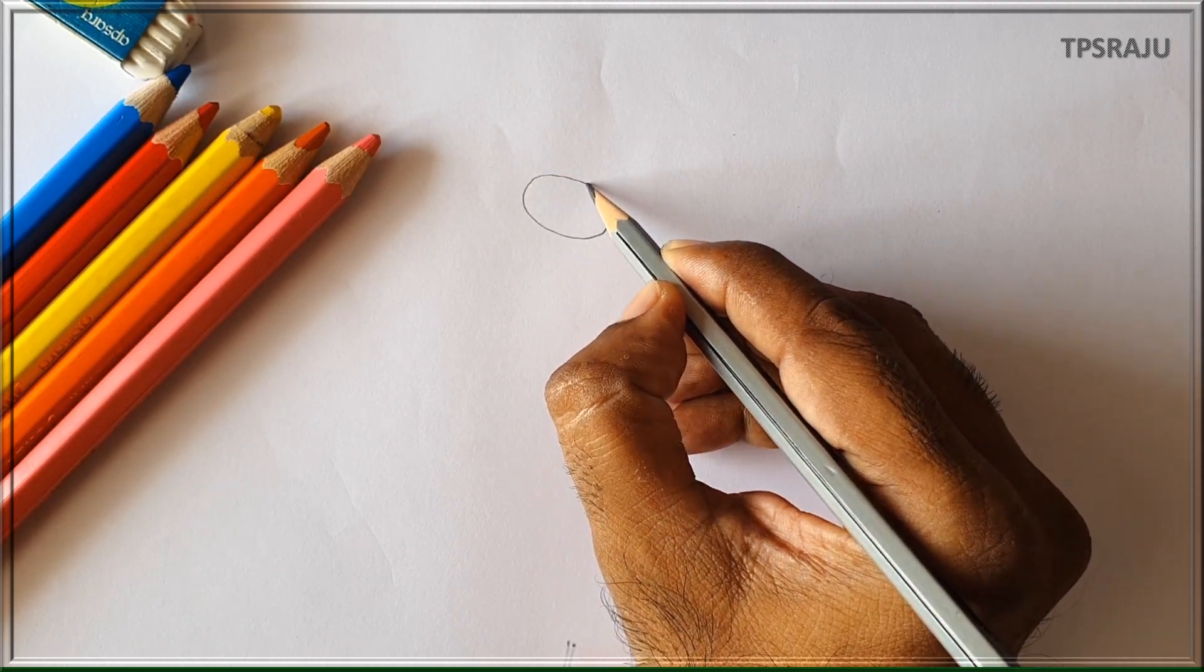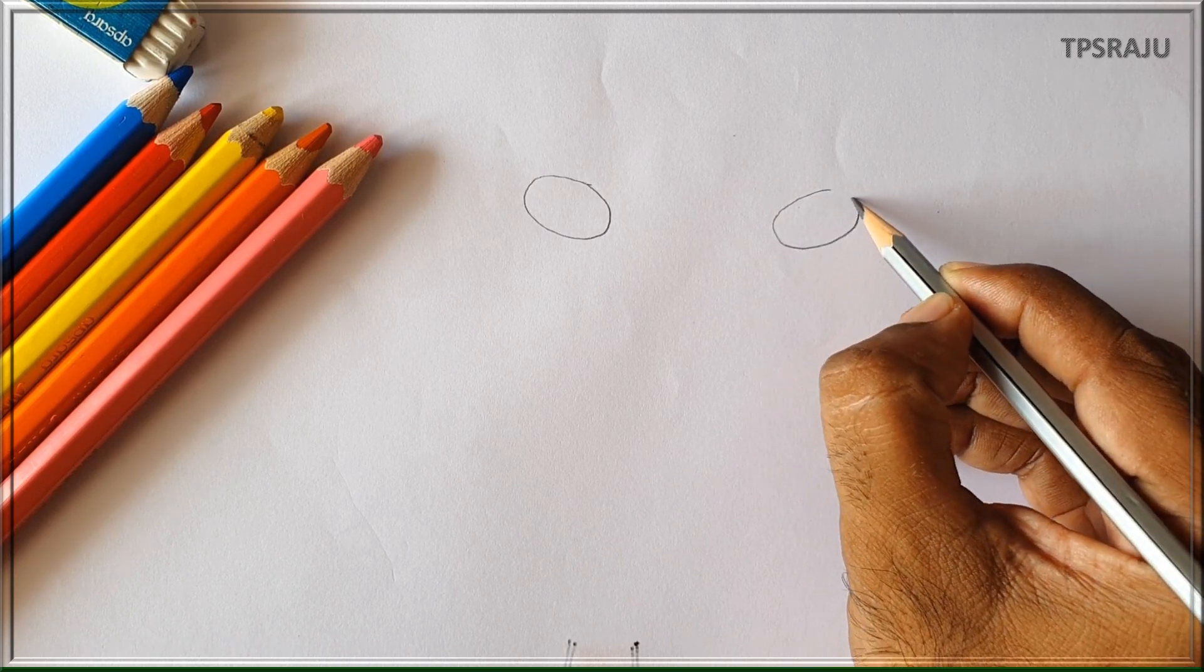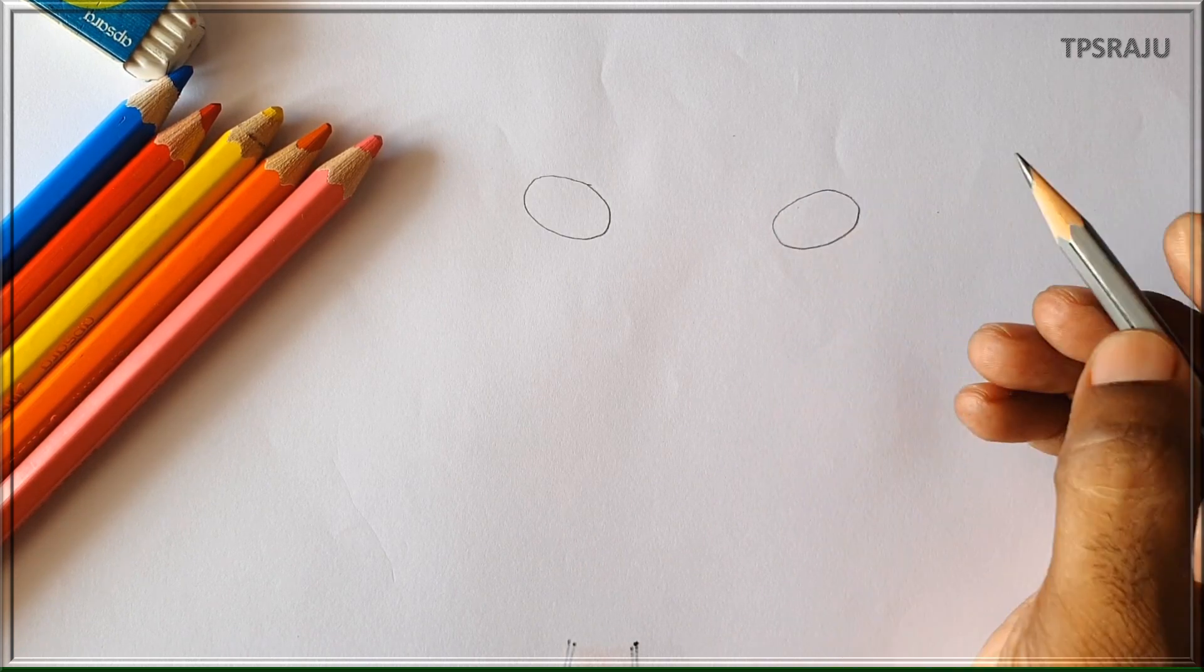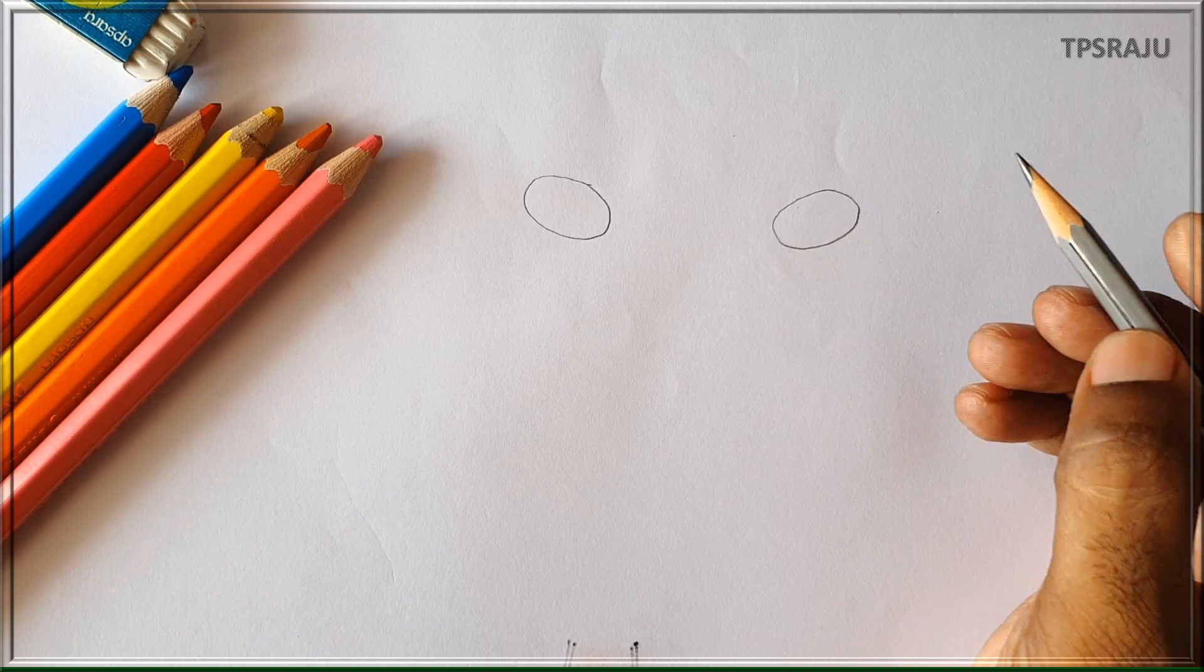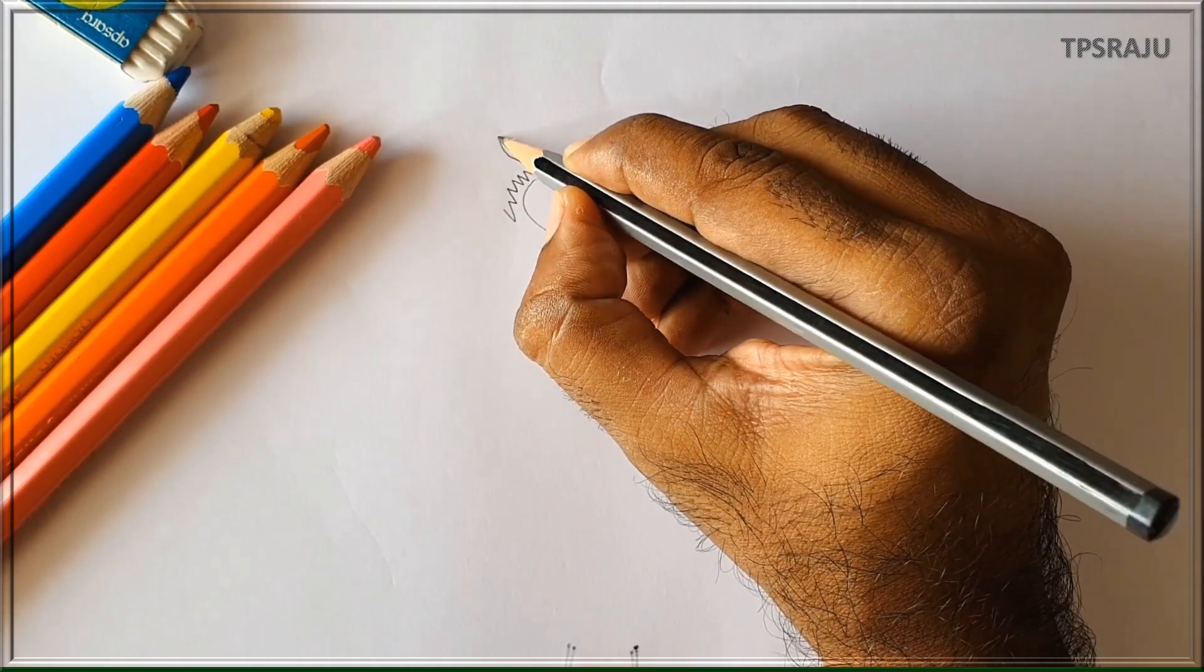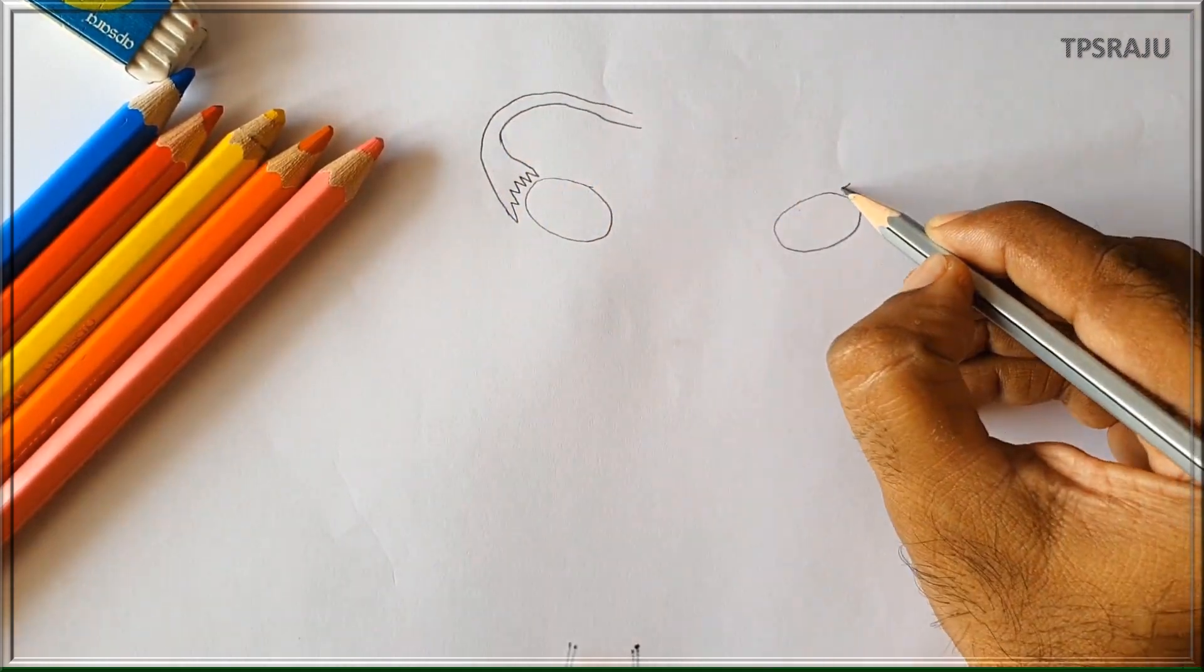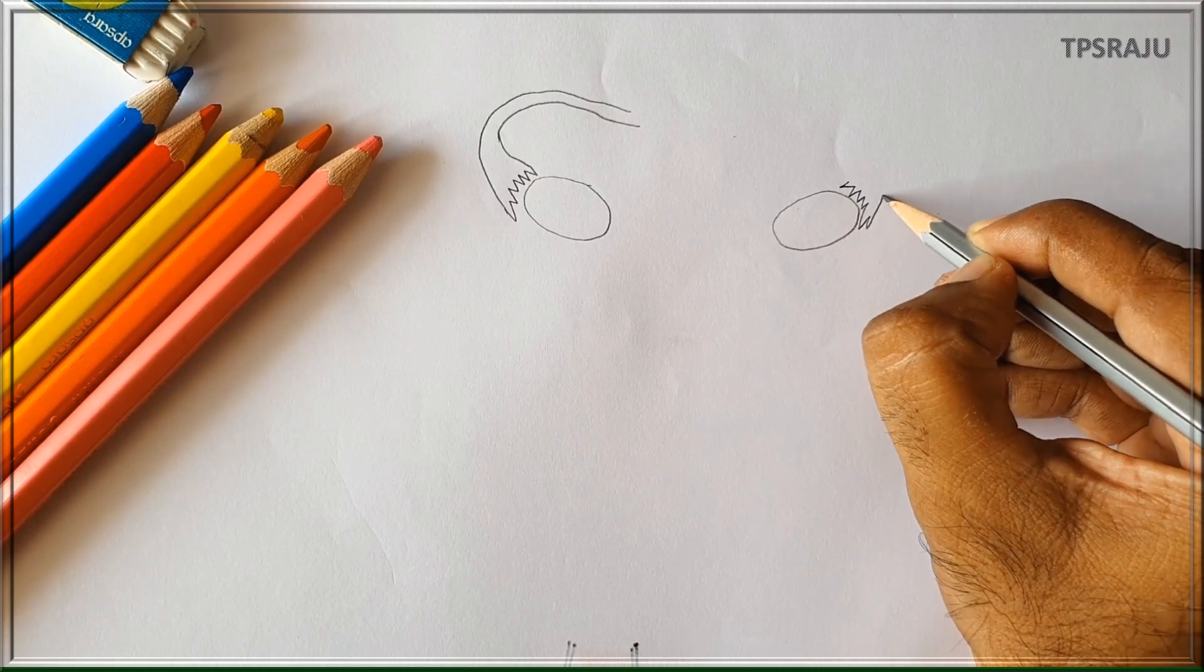A pair of oval-shaped ovaries are located in the abdominal cavity of the female body. Ova are produced in the ovaries. A pair of fallopian tubes are present near the ovaries. They receive ova which are released from the ovaries.